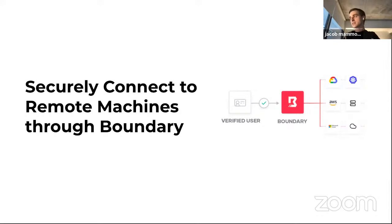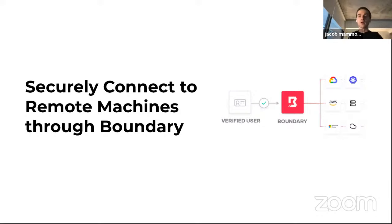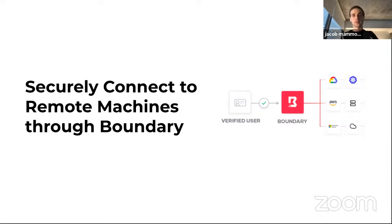One of the big benefits is the security aspect: with Boundary, I don't actually get onboarded onto the network. I don't get an IP address on the subnet where my databases or VMs live. Instead, Boundary brokers the connection for me to my target through a tunnel. Once I disconnect, I'm no longer connected and I was never actually on the network — there's no VPN. It acts very differently, and I'll show you how that funneling works when we go through the architecture.